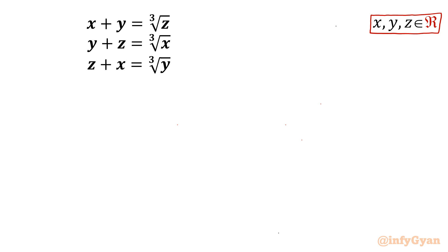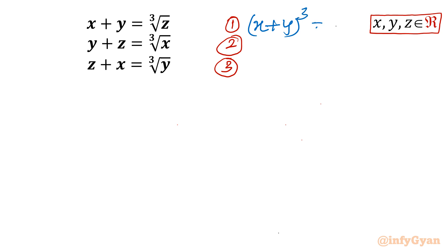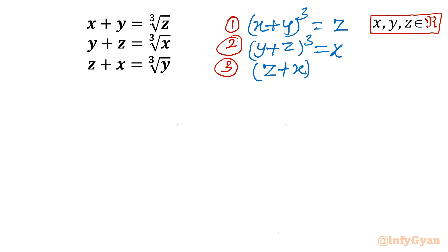Let me write our equations 1, 2, and 3 after taking the cube of both sides. Equation 1 becomes: (x+y)³ = z. Equation 2 becomes: (y+z)³ = x. And the third equation becomes: (z+x)³ = y.